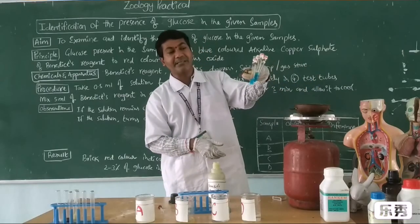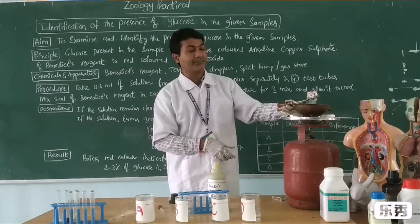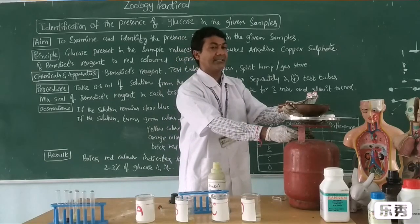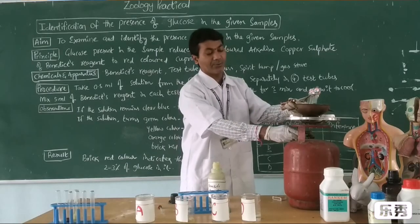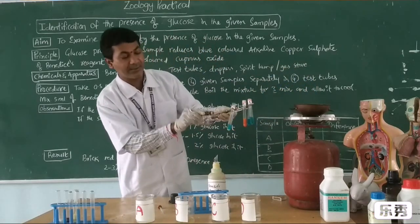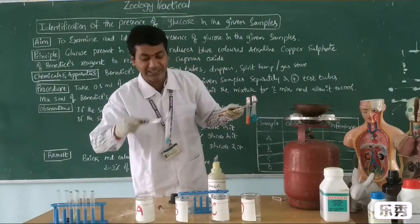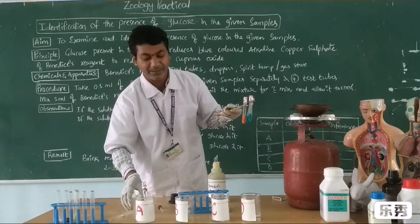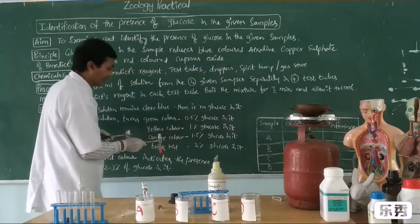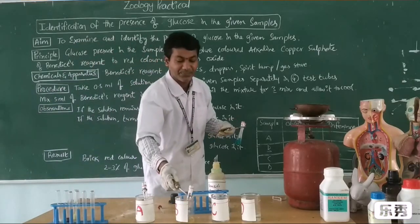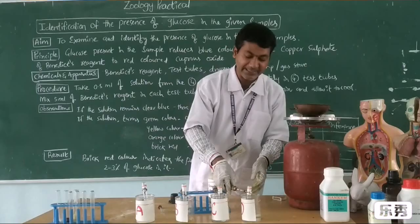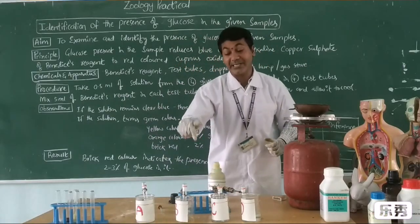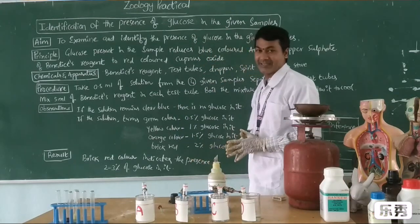3 test tubes remain the same blue color, and one has turned into red. Because I heated with more heat, it turned very quickly. Looking at all 4 test tubes: test tube A remains blue — no glucose found. Test tube B turns into red color — contains glucose. Test tube C and test tube D remain the same blue color. By this, we can understand that test tube B contains glucose, specifically 2 to 3% of glucose.